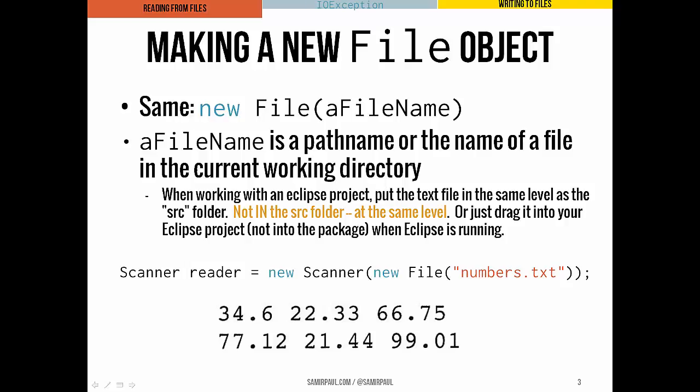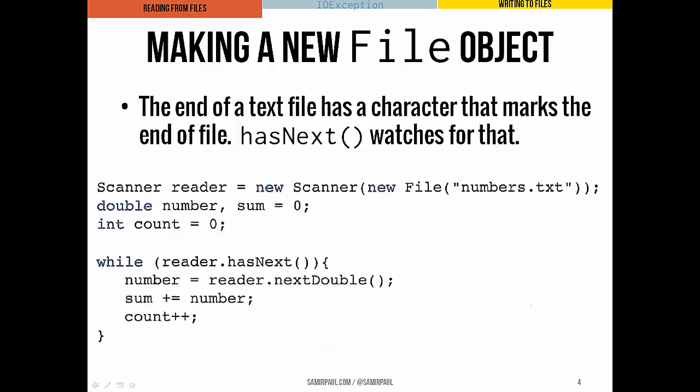At the end of every text file, there's a special character that marks the end of a file. It's not usually human readable, but if we're reading through a file automatically and we get to that special character, we know we've reached the end of the file. There's a method in the Scanner class called hasNext, and hasNext watches for that special end-of-file character. As soon as we've hit the end-of-file character, hasNext returns false. Otherwise, it means there's a next thing to read — we haven't reached the end of the file.